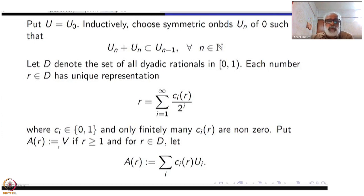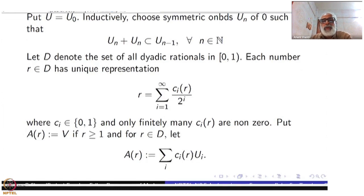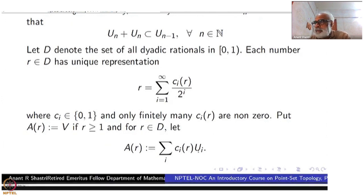Put A_r = V if r ≥ 1, A_1 = V, and if r is in D ∩ (0,1), put A_r = Σ c_i(r)·U_i. This makes sense because we are working in a topological vector space: the U_i are open subsets of V, so 0·U_i means just the zero vector and 1·U_i is just U_i. This is a finite sum since only finitely many c_i(r) are non-zero.